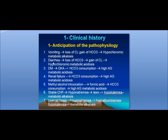If the patient develops diarrhea, they will lose bicarbonate and gain chloride, developing hyperchloremic metabolic acidosis. In diabetic ketoacidosis, bicarbonate will be consumed, leading to high anion gap metabolic acidosis. In renal failure, bicarbonate is consumed by fixed acids, also producing high anion gap metabolic acidosis. Methanol intoxication leads to formic acid formation, consuming bicarbonate and causing high anion gap metabolic acidosis.